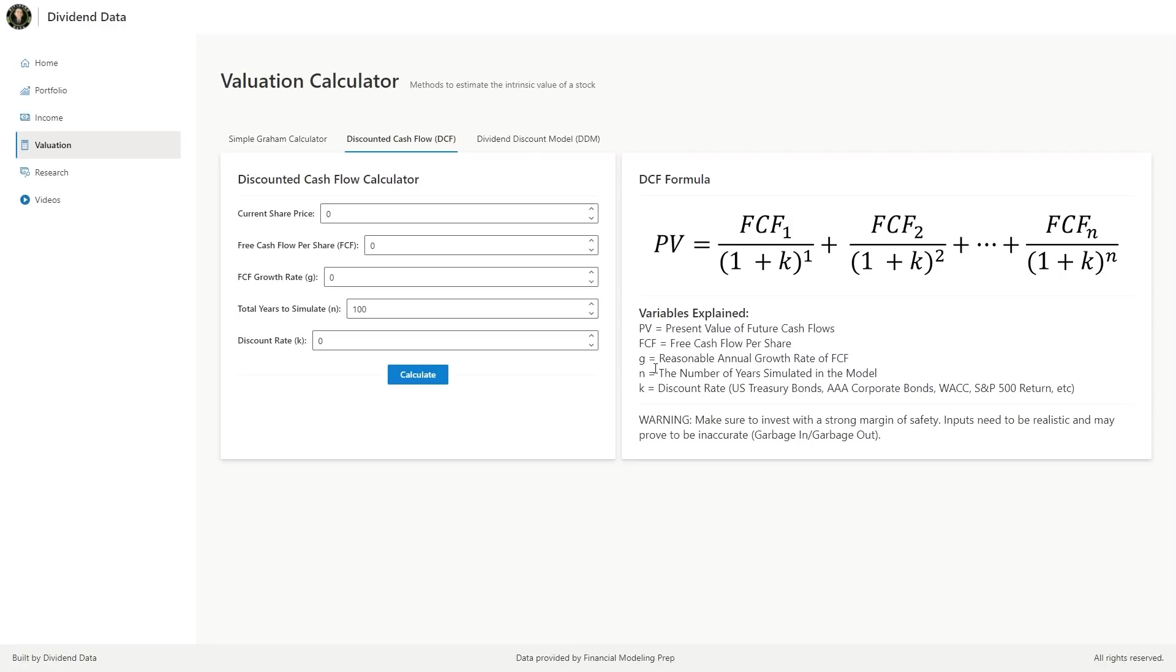Then you have G, which is the reasonable annual growth rate of free cash flow. Reasonable is the key word here. It's important to be conservative with projections and only choose numbers which you can pick with a high degree of certainty.